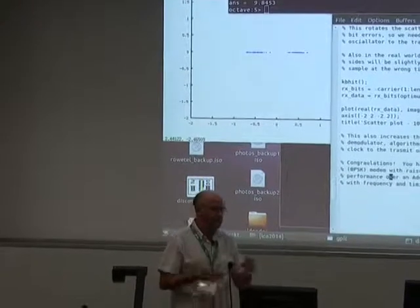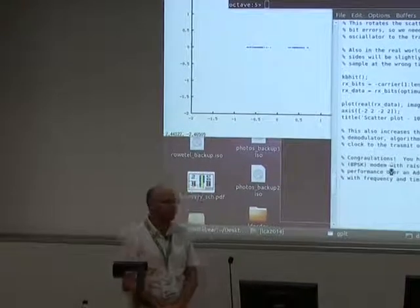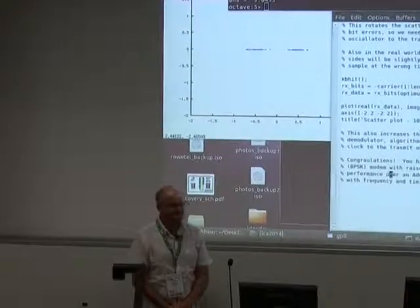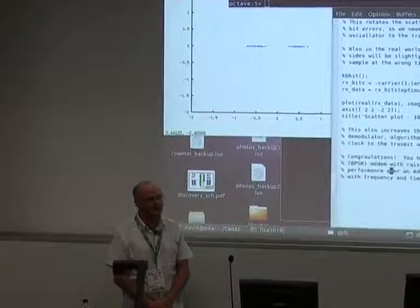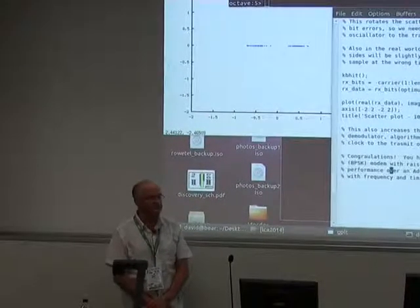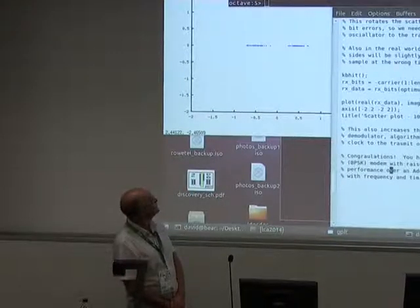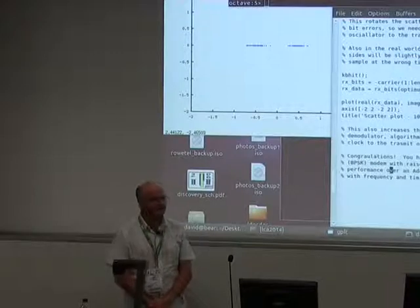The spectral plots were done with Fourier transforms — converting from the time to the frequency domain using a Fourier transform routine. The scatter plot is not a Fourier transform; that's just plotting complex numbers on an xy plane.